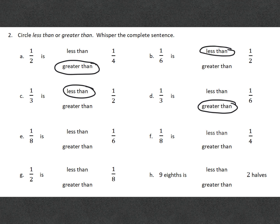Letter E, one eighth is less than one sixth. F, one eighth is less than one fourth. G, one half is greater than one eighth. And H, nine eighths is greater than two halves.